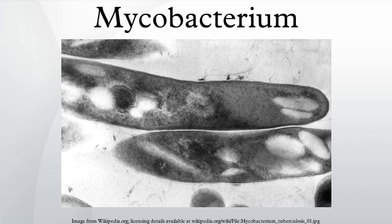Ungrouped slowly growing species include M. branderi, M. cookii, M. celatum, M. haemophilum, M. malmoense, M. szulgai, M. leprae (which causes leprosy), M. lepraemurium, M. lepromatosis (another cause of leprosy, described in 2008), M. botniense, M. chimaera, M. conspicuum, M. doricum, M. farcinogenes, M. heckeshornense, M. intracellulare, M. lacus, M. marinum, M. monacense, M. montefiorense, M. morale, M. nebraskense, M. saskatchewanense, M. scrofulaceum, M. shimoidei, M. tusciae, M. xenopi, and M. yongonense.